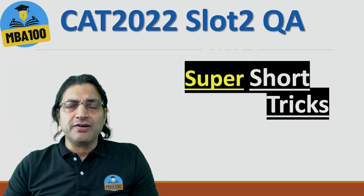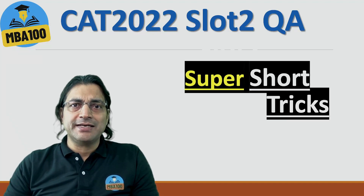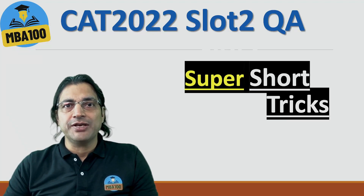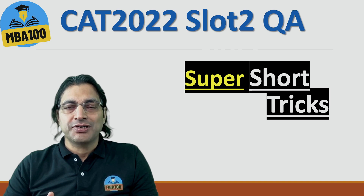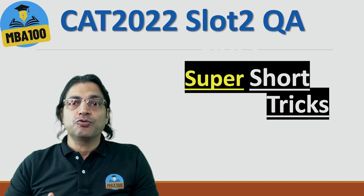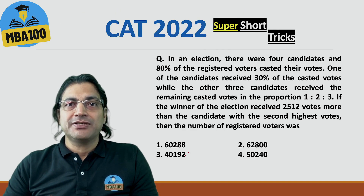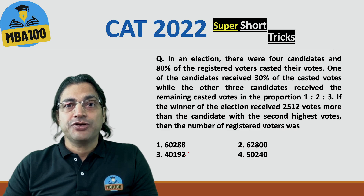Hi, I'm Vijay Kalyan Chha from MBA 100, and in this super short session, we are going to discuss a super short trick to do a quantitative aptitude question that appeared in slot 2 of CAT 2022.